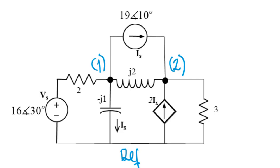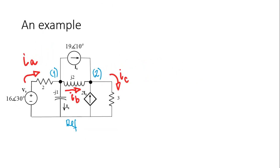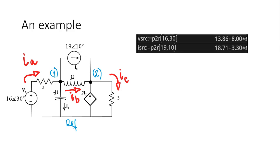You know what I'm going to do? I will choose a reference node, identify the two nodes one and two, and next choose the direction for the currents in the branches ia, ib and ic. I go to the calculator, the HP Prime, define the variable v source and i source with the corresponding values 16 with 30 degrees, 19 with 10 degrees.